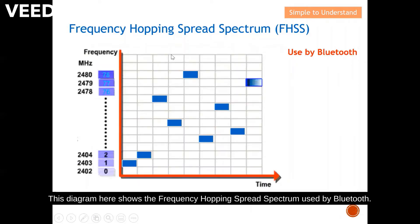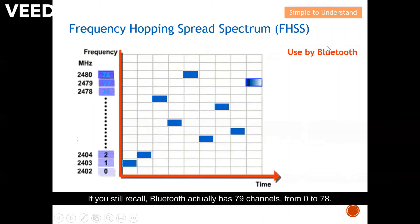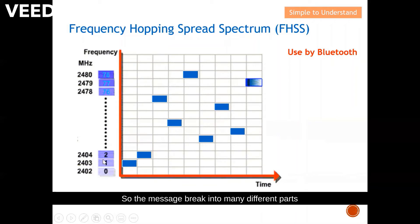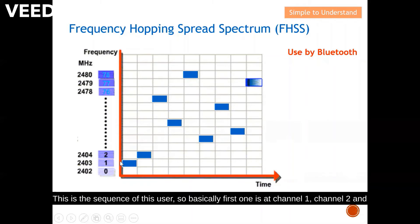This diagram shows frequency hopping spread spectrum as used by Bluetooth. The horizontal axis is time and the vertical axis is frequency. Bluetooth has 79 channels from 0 to 78. The message is broken into several parts, and at any particular time they lock into one channel to transmit — each channel is one megahertz wide. So the message breaks into many different parts and at any point in time they occupy one channel to send the message to the receiver.